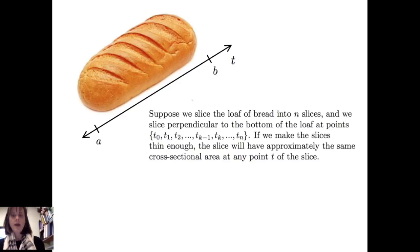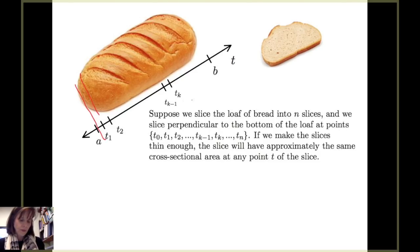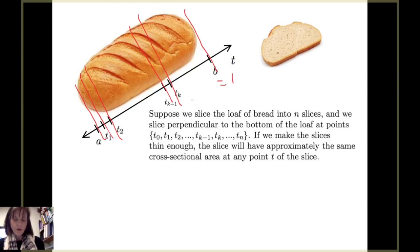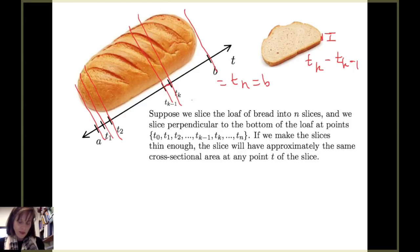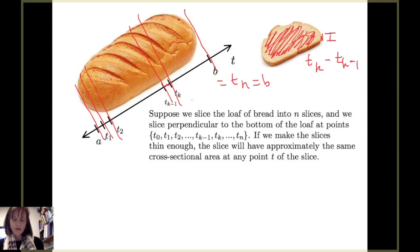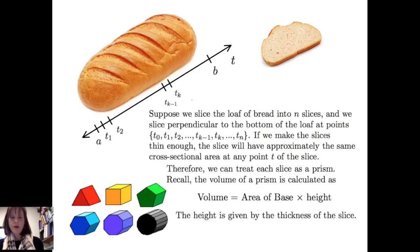And if we make the slices thin enough, each slice will have approximately the same cross-sectional area at any point t within the slice. So here we see our cutting points. Our first slice is between a and t sub 1, our second between t sub 1 and t sub 2, and our kth slice is between t sub k minus 1 and t sub k. Since the cross-section is approximately constant, we can treat that slice of bread as a prism. The volume of a prism is the area of the base times the height, where the height is the thickness of the slice.